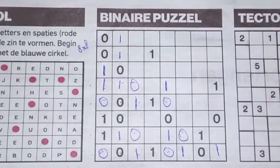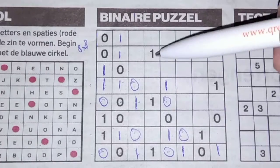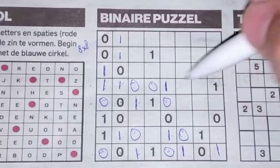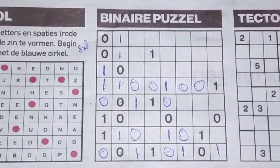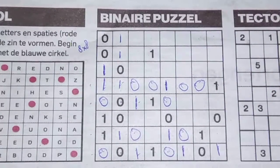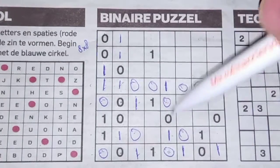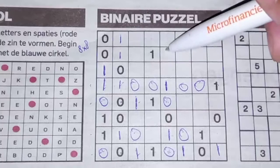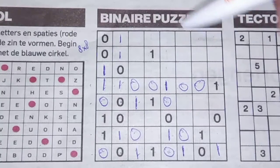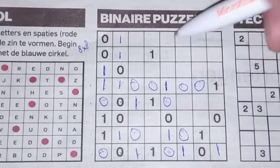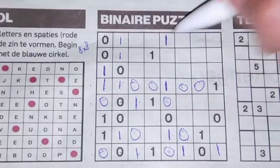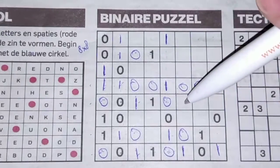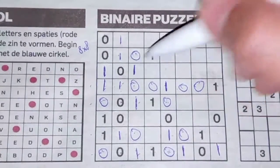Between 2 ones comes a zero. Then we have 4 ones, so the rest are zeros. We have 3 zeros here. If I place the 4th zero here, then we have 3 ones in a row — not allowed. So this cannot be a zero; this should be a 1. Between 2 ones comes a zero. Between 2 zeros comes a 1.